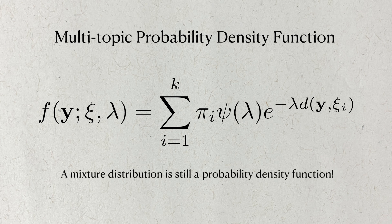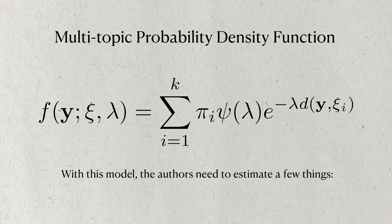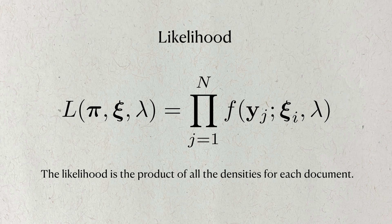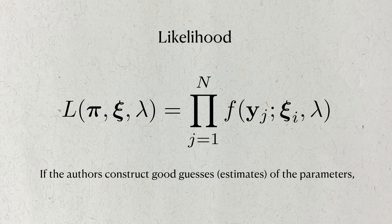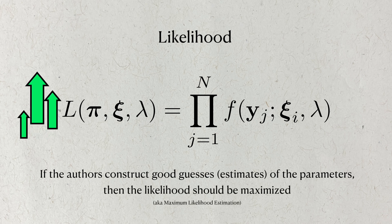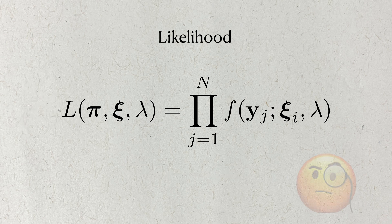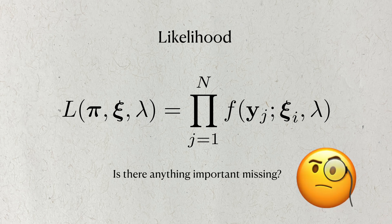So this is the model the authors use to represent the different topics in statistics. A mixture distribution itself is still a probability density function, just more complex. With this model, they need to estimate a few things: the mixing weights, lambda, and most importantly, what these centroids are. To do this, we can form what's called a likelihood, which is just a product of all the PDFs for all the different observations. If the parameters of this model are estimated well, then the value of this likelihood should be maximized — but it's easier said than done. If you look at this model carefully, do you notice if there's anything missing?